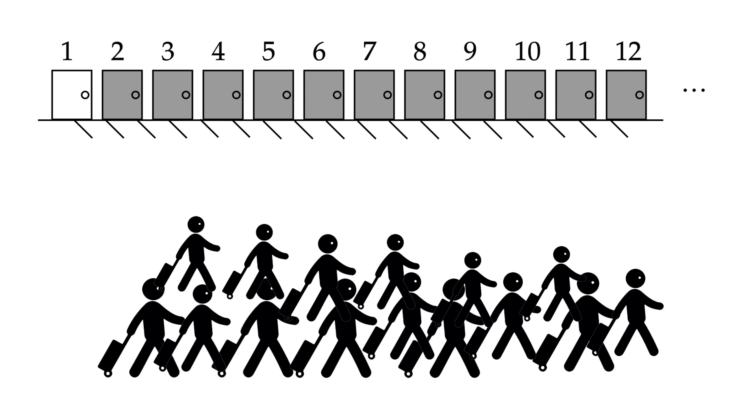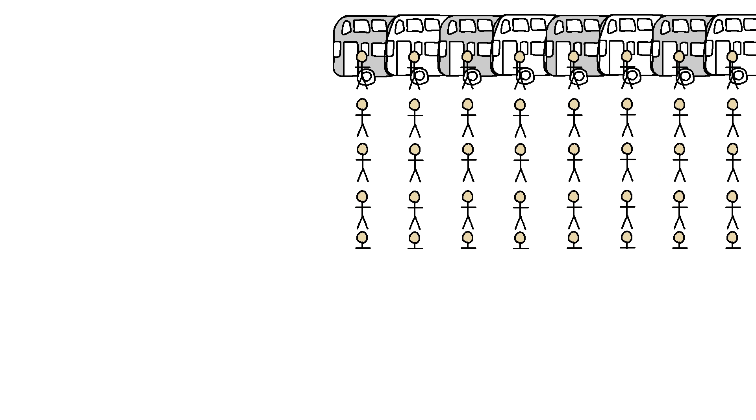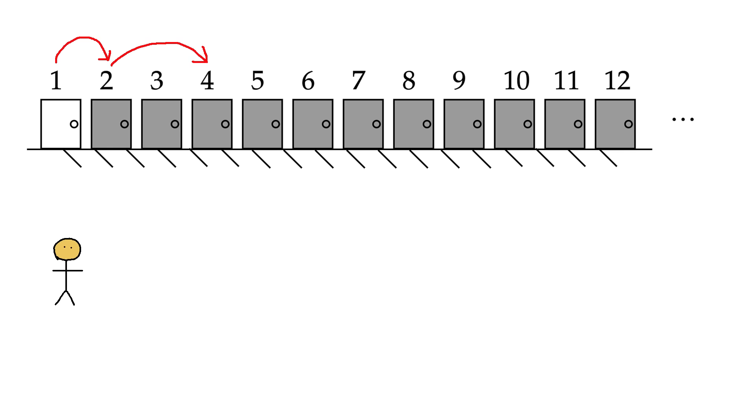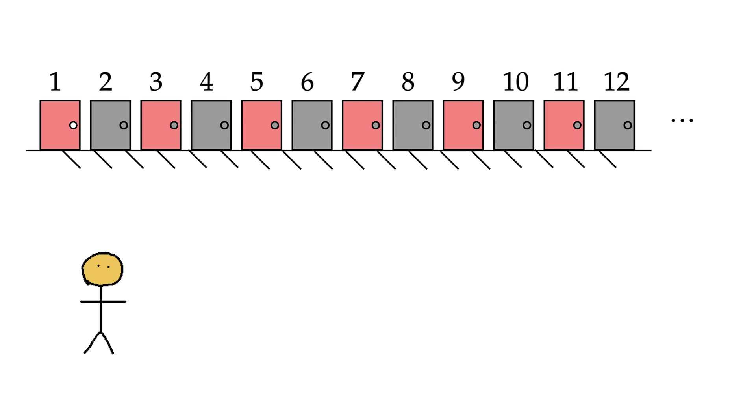What's even more mind-boggling is that the hotel can even handle an infinite number of new guests. They do this by moving the person in room 1 to room 2, the person in room 2 to room 4, the person in room 3 to room 6, and so on. This cleverly leaves all the odd-numbered rooms empty, and those are countably infinite, meaning there's an endless amount of them. So, there's plenty of room for the new arrivals.